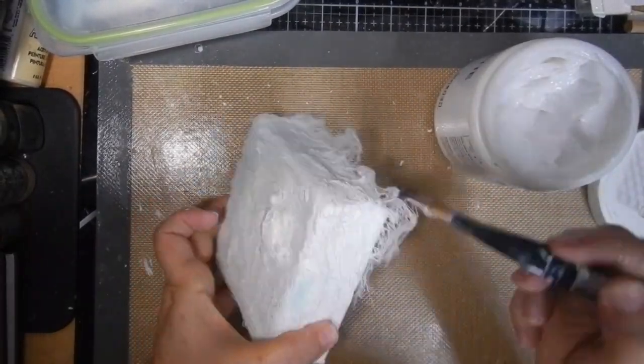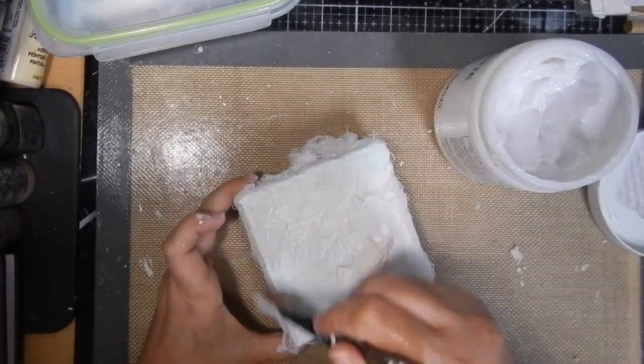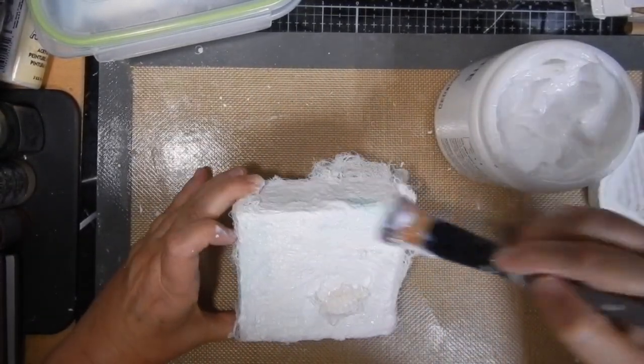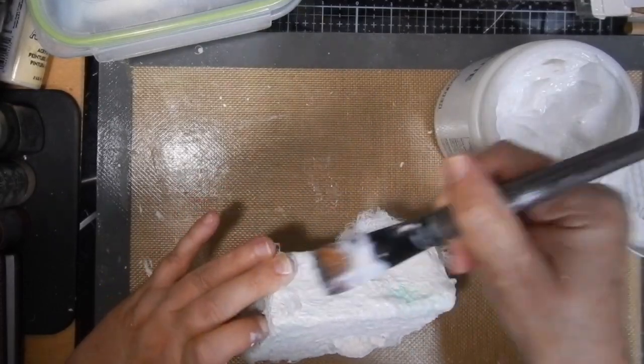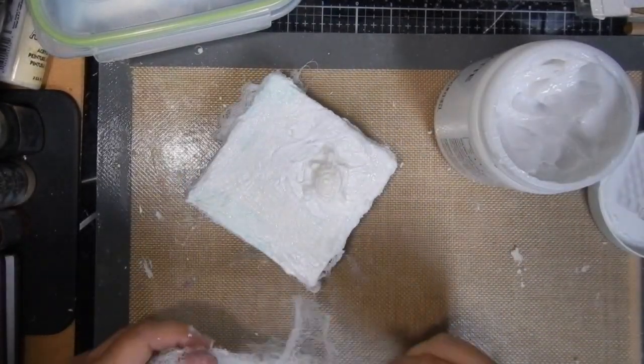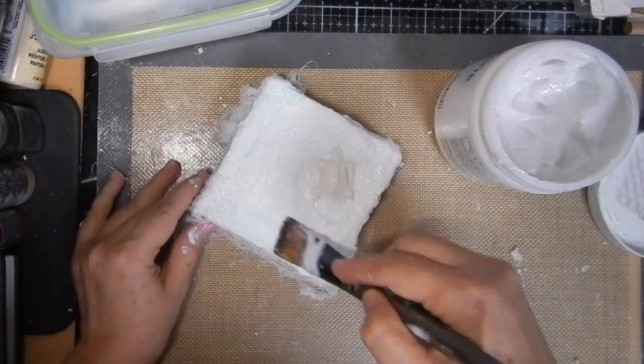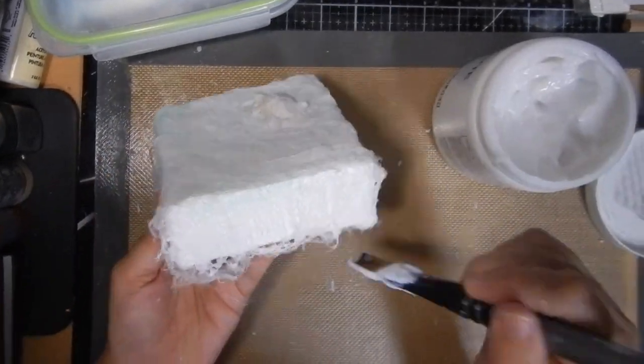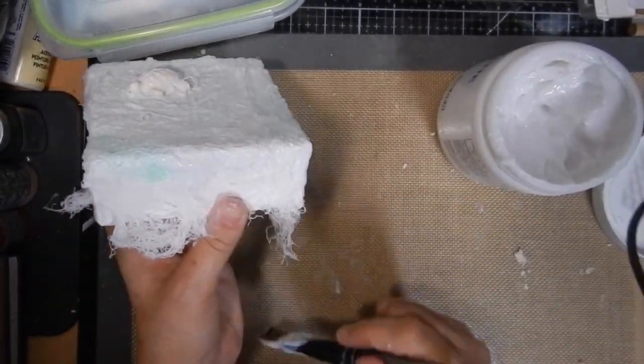Once you have enough of the gauze on your canvas and you have fully saturated it with gel medium, you're going to set it aside to dry. When it's dry thoroughly, you're going to add a coat of gesso, and then we will begin to add color to our canvas.